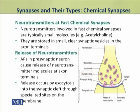Action potentials in the presynaptic neuron cause the release of neurotransmitter molecules at the axon terminals. This release occurs by exocytosis, in the region called the synaptic cleft, through specialized sites on the membrane.